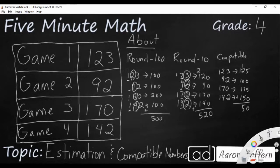So that's 550. That's a lot farther off. So what is the best choice: rounding to 100, rounding to 10, or compatible numbers?